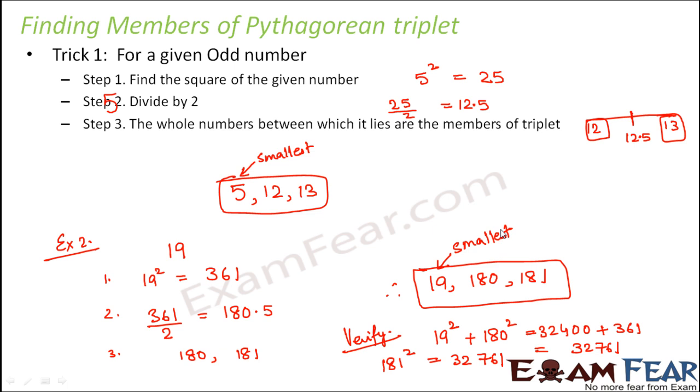Another important thing to note here is that with this trick you will always be able to find a Pythagorean triplet for a given number. But that does not mean that that is the only triplet that you can get from that number. For example here 5, 12, 13 is a triplet. But that does not mean that this is the only triplet where each of these numbers are participating. For example 12 can be a part of another Pythagorean triplet also where maybe 12 is the smallest number.